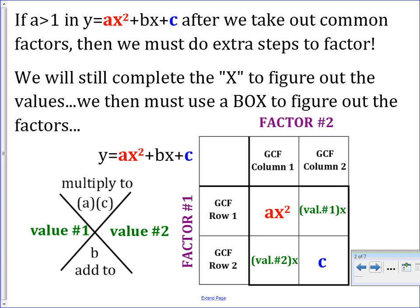We are going to begin the problem the exact same way. The first thing we are always going to do is look for common factors. Once we get rid of our common factors, we start filling in our x. We start by doing a times c on top — that is step 1. Step 2, we put b on the bottom. After that, we figure out our two values: the two values that multiply to a times c and add to b.